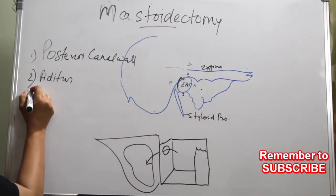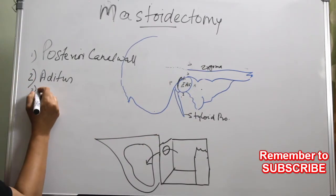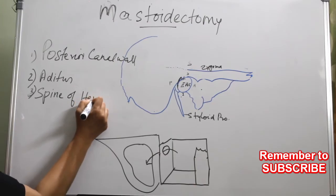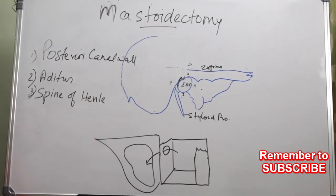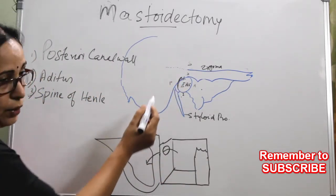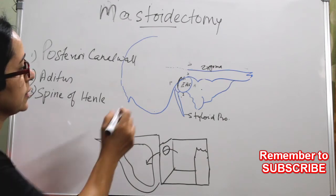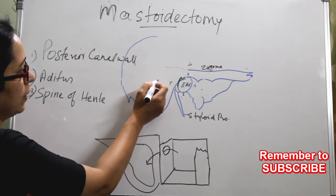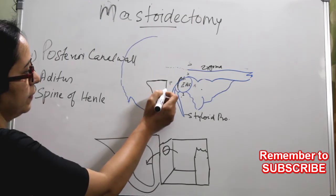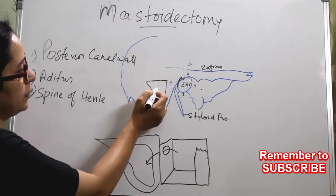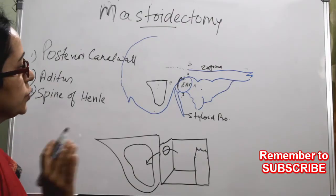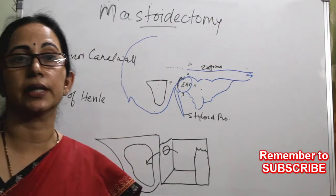Another important term is the spine of Henle. It is a bony prominence from the posterior canal wall. The importance is that the mastoid antrum, in most cases, lies inferior to the spine of Henle — usually posterior-inferior to the spine of Henle is where we will find the mastoid antrum.